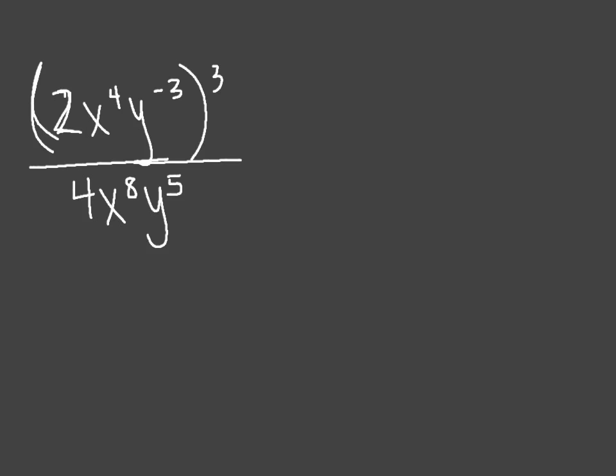So if I look at this problem and do my parentheses first, I'm going to take this outside exponent and distribute it to everything that's on the inside. So that would make 2 to the power of 3. The x already had a 4, but I'm going to give it another 3. The y already had a negative 3. It gets another power of 3.